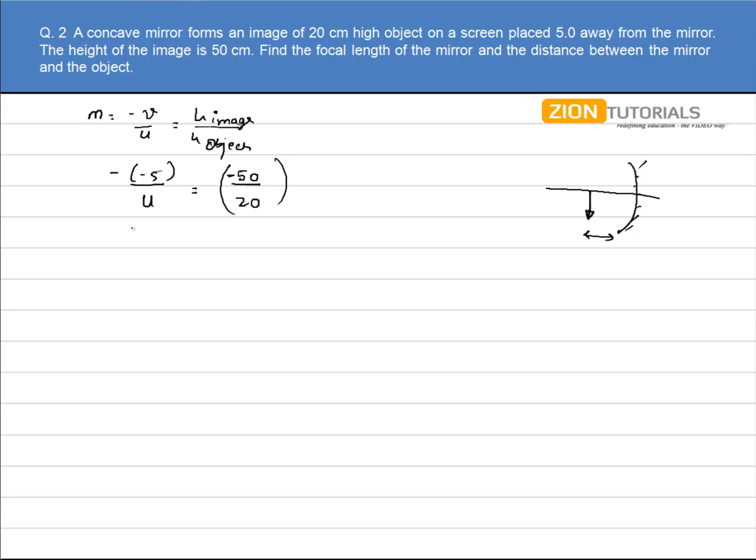On solving this I get the value of u as 2m with a negative sign. This negative sign shows that the object is on the left hand side of the mirror. This is my object.